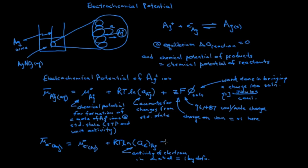Because an electron is charged, we have to account for the work done to bring a charge into the silver metal. We'll also multiply this quantity by Faraday's constant in order to convert coulombs to moles, and we'll also multiply by minus one, the charge on an electron.